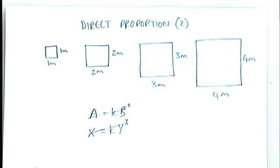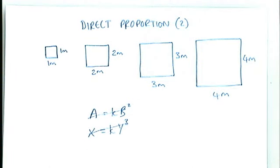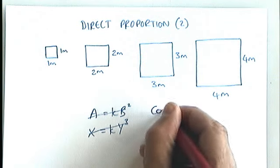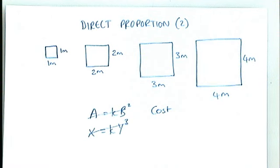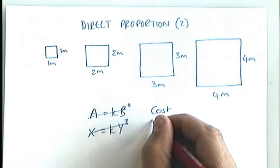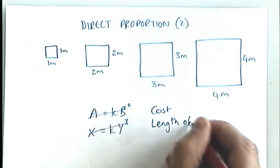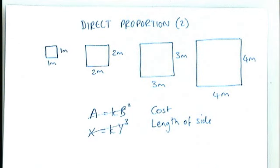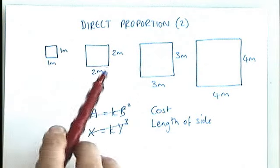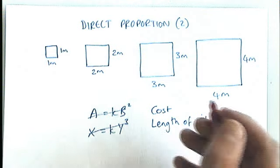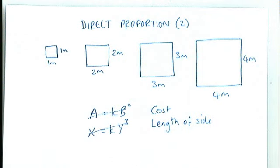Imagine that we've got square patches of floor that need to be re-carpeted, and the cost of re-carpeting those square patches is what we're after. We're going to look for a relationship between the cost of carpeting and the length of the side of the square. We've got four different bits of carpet: a 1×1, 2×2, 3×3, and 4×4, which are going to cost different amounts depending upon how big they are.